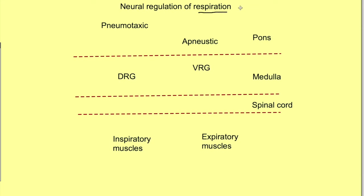Respiration can be controlled voluntarily as well as involuntarily. Its neural control is a bit complex, so let's try to understand it and why such complexity is required. Involuntary neural regulation of respiration is brought about by various neural centers located in the medulla and pons, and both pons and medulla have two main centers.